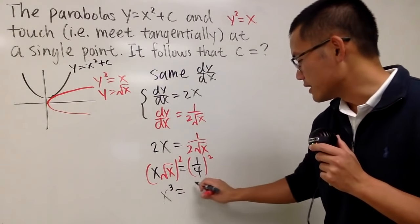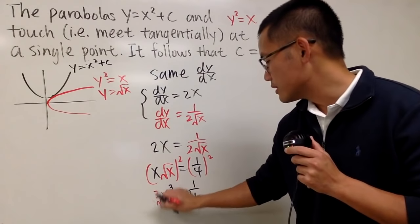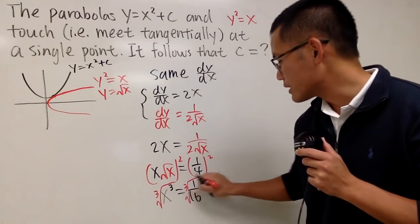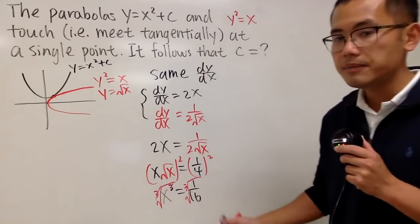And that's equal to 1 over 16. And in the end, take the cube root on both sides.